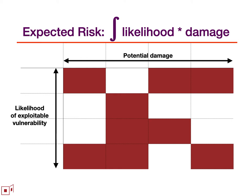Expected risk is just the flip side of expected value. For each potentially exploitable vulnerability, the vertical axis is the likelihood that the vulnerability is actually exploitable, and the horizontal axis is the value at risk to the exploitation of that vulnerability. The red surface area is then the overall expected risk of the system, and our goal is to reduce that red surface area in order to reduce overall expected risk.